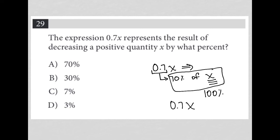How much have I decreased from to go from 100% of x down to 70% of x? That decrease is 30%. And that's why the answer here is choice B.